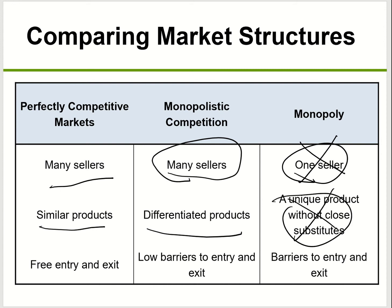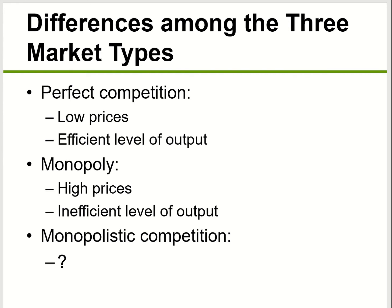For perfect competition and monopolistic competition, there is free entry and free exit. But for monopoly, there's a barrier to entry. Looking at prices: in perfect competition, price is low and the market produces at an efficient level where price equals marginal cost. For monopoly, they charge higher prices, which leads to inefficient output — price is more than marginal cost. Monopolistic competition is somewhere in the middle.